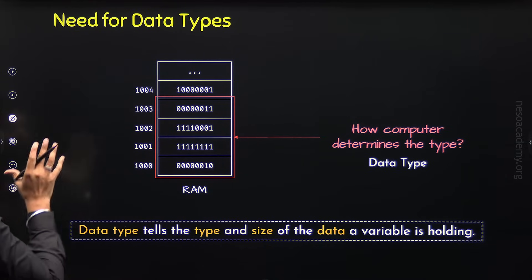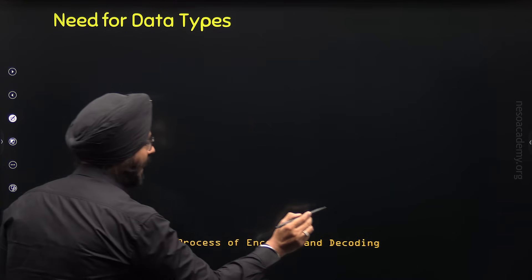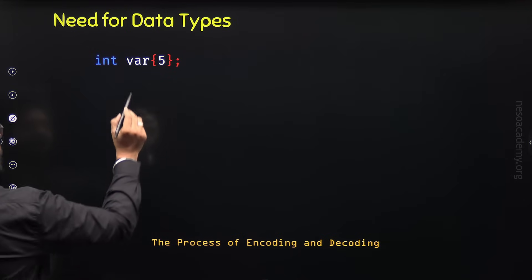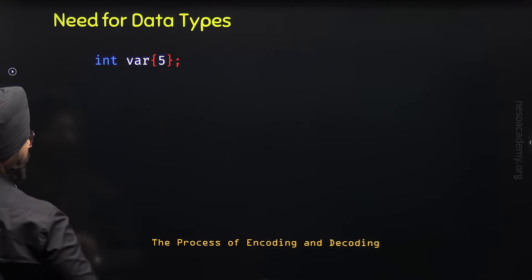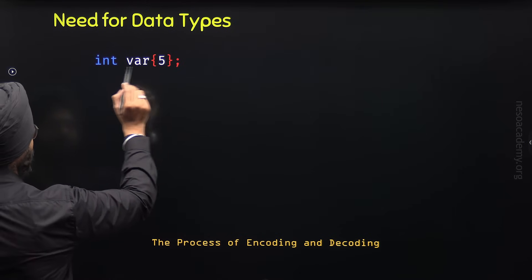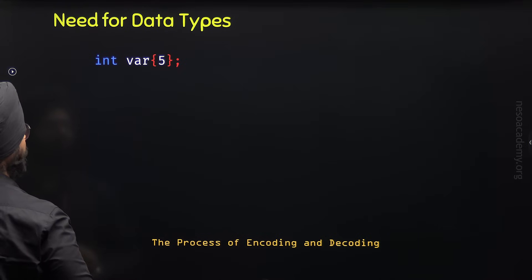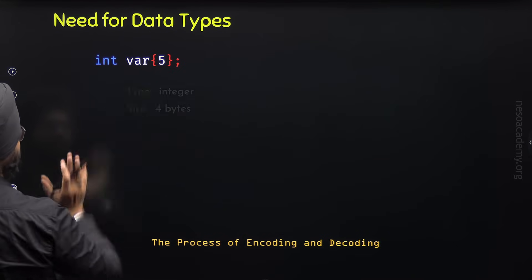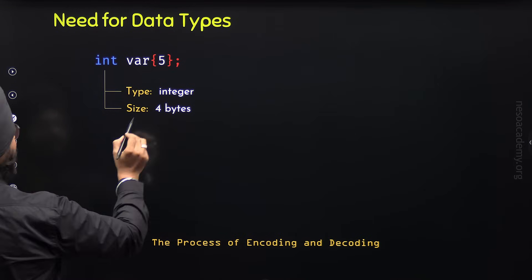To understand this concept better, let's take one example and understand the complete process of encoding and decoding that happens behind the scenes. Let's say we have defined a variable `var` with data type int and initialized it with value 5. This means the variable can hold an integer value. There is no type mismatch here — the data type matches the type of the value. From the data type, the computer knows the type of the data is integer and the size of the data is 4 bytes.